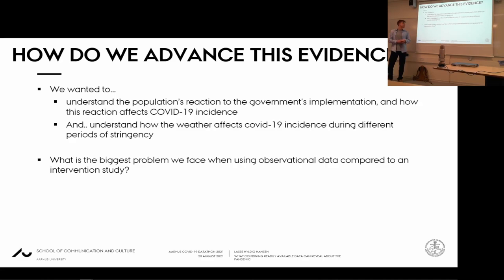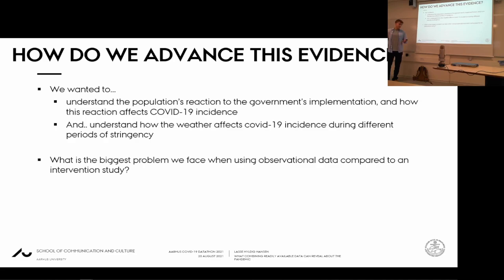We want to understand the population's reaction to the restrictions — how the interaction between residential mobility and transit mobility interacts with government-implemented restrictions. How does weather interact with government stringency? During high stringency periods, what happens when the weather is also warm? We're modeling COVID-19 incidence — the number of COVID cases per 100,000 residents in each municipality.